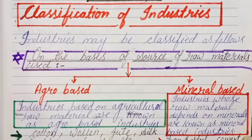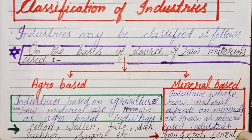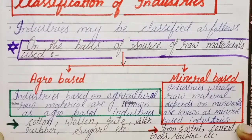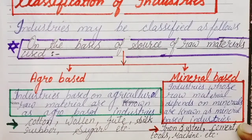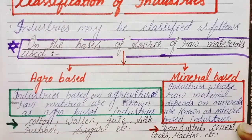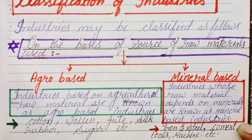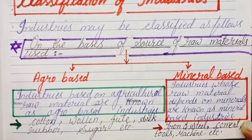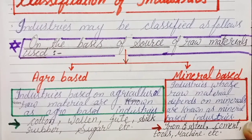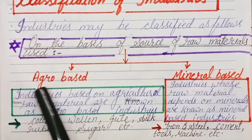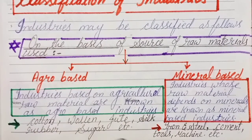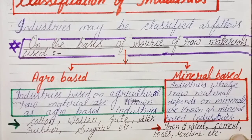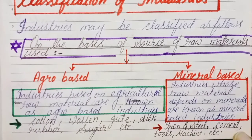On the basis of raw materials used in an industry, we will classify industries into two categories: first is agro-based industry, and second is mineral-based industry.